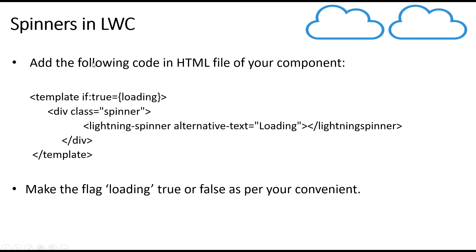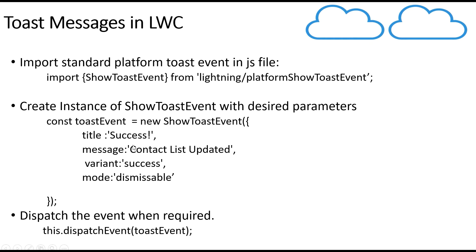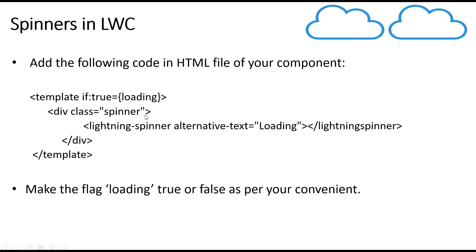Using a spinner in lightning web component is very easy. You just need to include the lightning-spinner into your HTML file and wrap this spinner using some boolean variable so that you can switch the spinner on and off. You can include this spinner and then make this flag true or false according to your need.